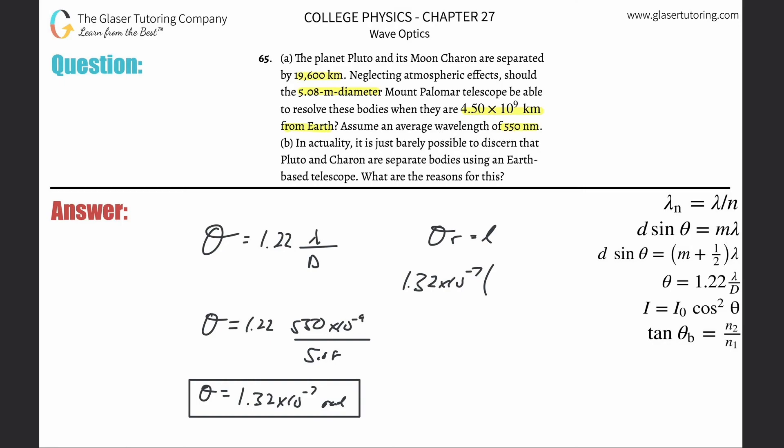And then multiply it by the distance basically between Earth and these two objects, which is about 4.5, right? 4.5 times 10 to the ninth kilometers. But we need that in meters, so just add 3 to that exponent there, so that should become 12. That's equal to L.